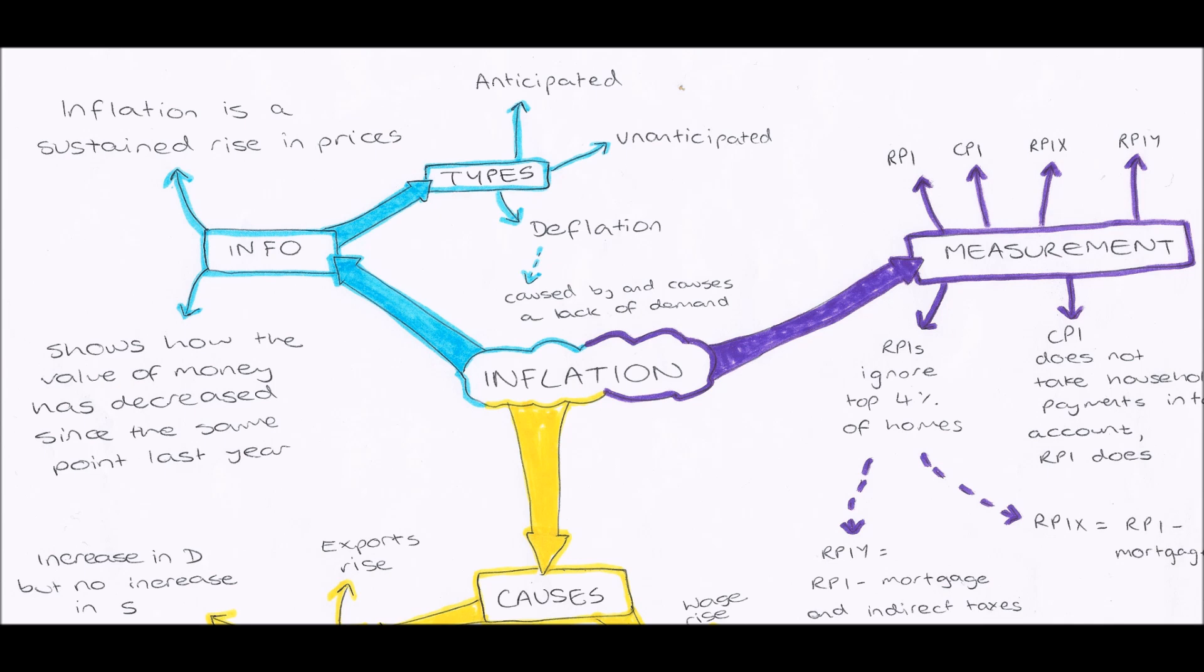Therefore the value of money increases because I can now buy more for that money, so the opposite way around with the Freddo example. Now how do we measure inflation? Well, inflation is measured using a series of indexes: the RPI, the CPI, the RPIX, and the RPIY.